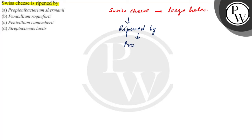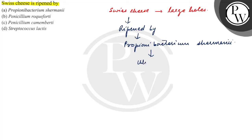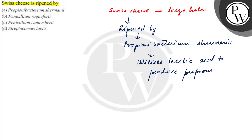That bacterium is Propionibacterium shalmini, which is responsible for the ripening of Swiss cheese. This bacterium utilises lactic acid to produce propionic acid and CO2.